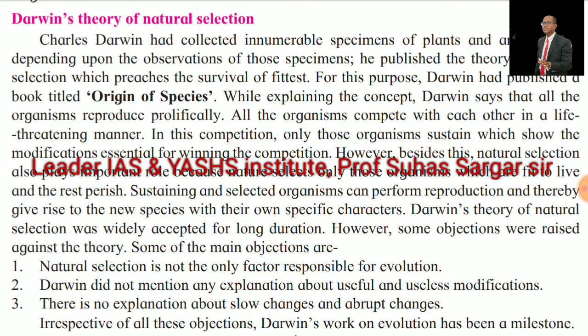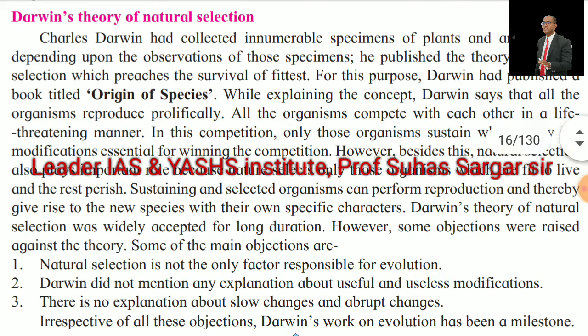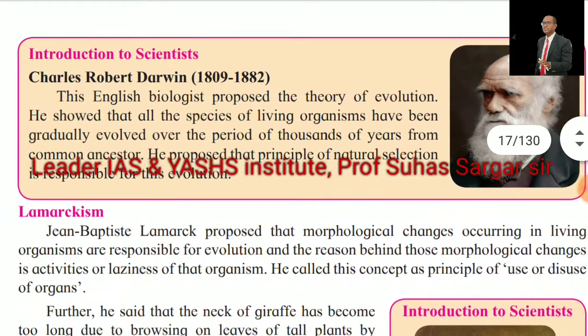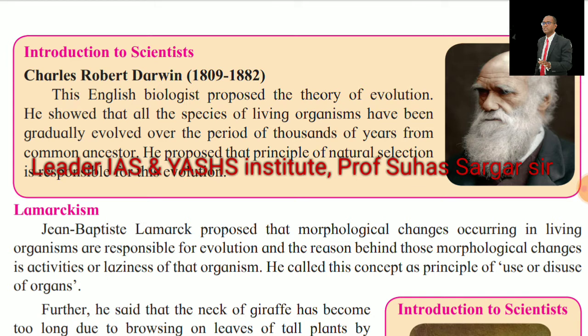Darwin's Theory of Natural Selection was widely accepted for a long duration; however, some objections were raised. Some main objections are: natural selection is not the only factor responsible for evolution; Darwin did not mention any explanation about useful and useless modifications; and there is no explanation about gradual and abrupt changes. Irrespective of all these objections, Darwin's work on evolution has been a milestone. Charles Robert Darwin (1809–1882), this English biologist, showed that all species of living organisms gradually evolved over thousands of years from common ancestors, with natural selection responsible for this evolution.